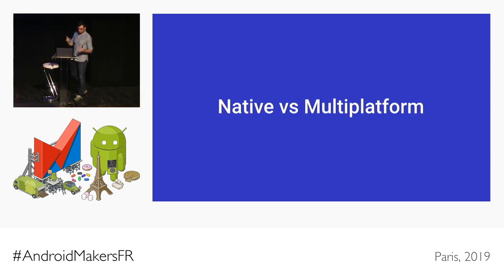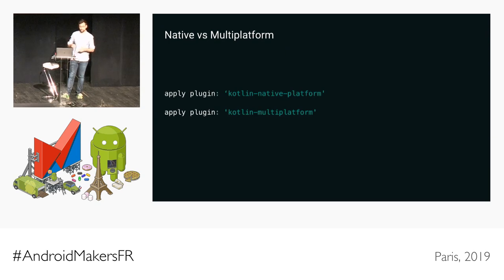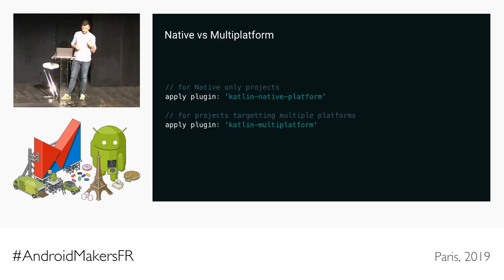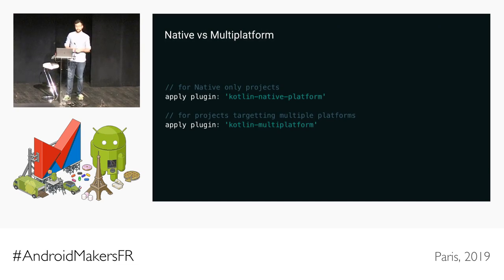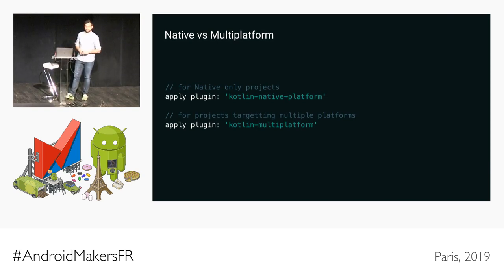There's one question we need to address: calling native versus calling Multiplatform. It all comes down to the plugins you're actually using. When you start a Multiplatform project, you apply the Kotlin Multiplatform plugin. The native plugin is only for native projects — meaning you're not targeting any platform, just working with native code. But if you want to target different platforms, you need to use the Kotlin Multiplatform plugin. It's a completely different approach, and it's really hard to understand when people talk about Kotlin Native or Kotlin Multiplatform — it's important to know the distinction between both.